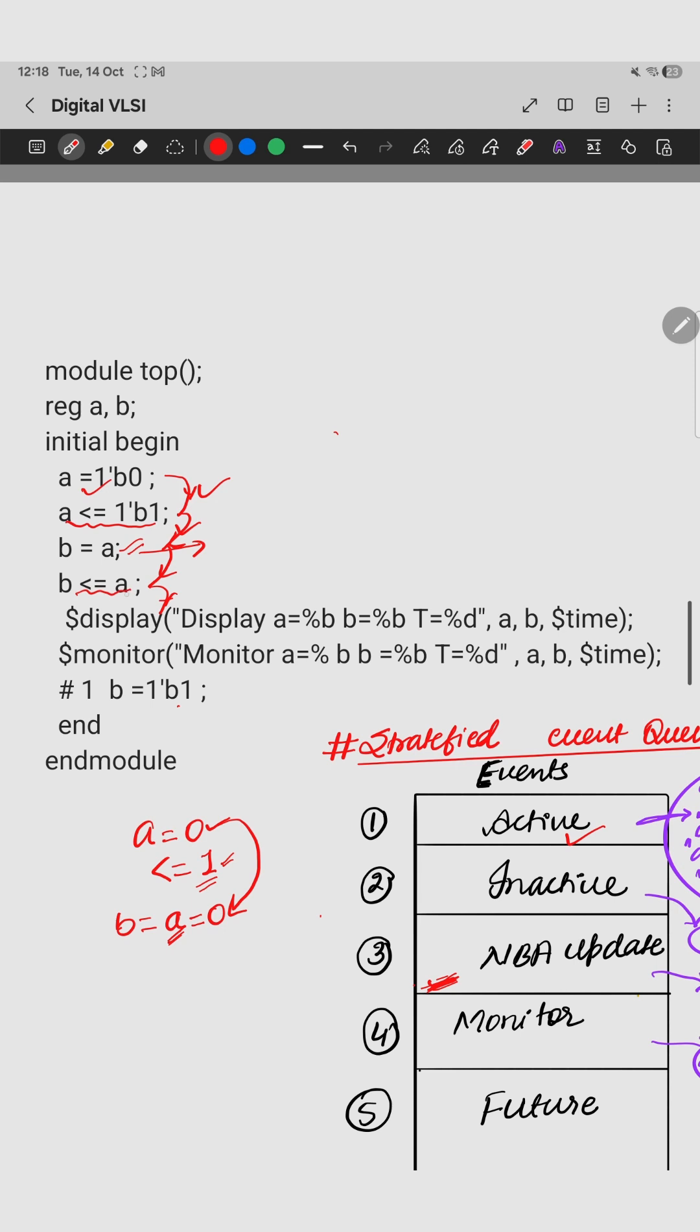Now B is also getting this. Again I have written B is scheduled to get the value of A. But here A value is 0 and not 1. So this is the talk of active block. Now in inactive there is no statement.